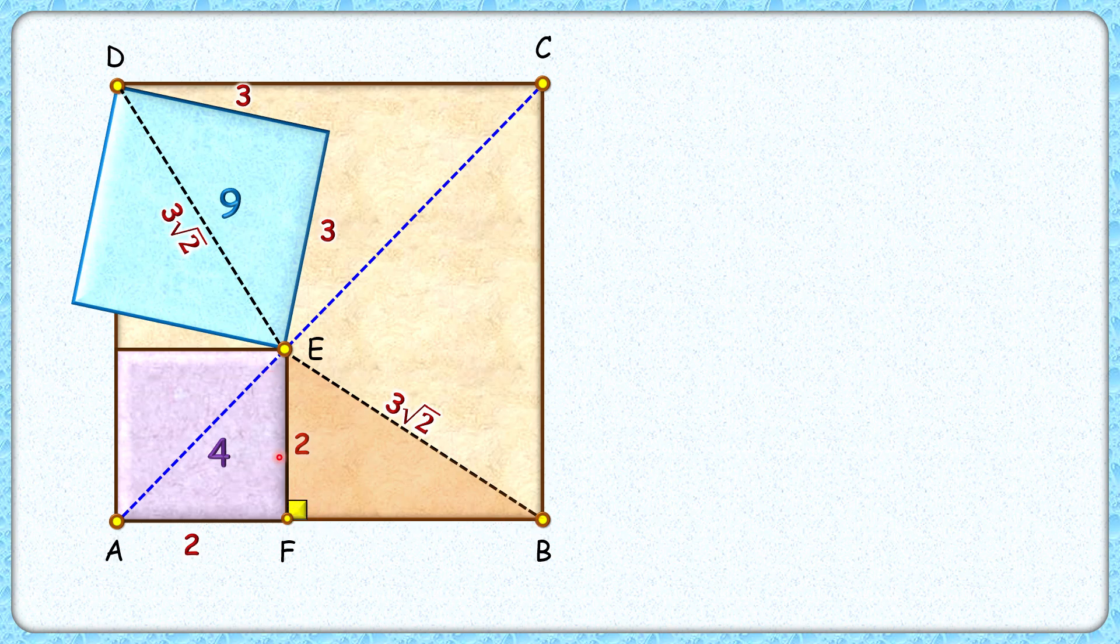So in this right angle triangle, applying Pythagorean theorem, we will get FB length as √((3√2)² - 2²), which equals √14.